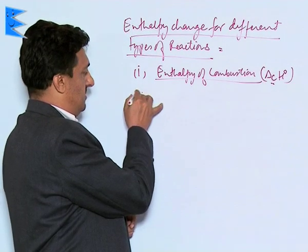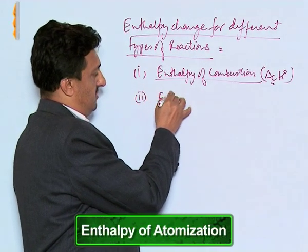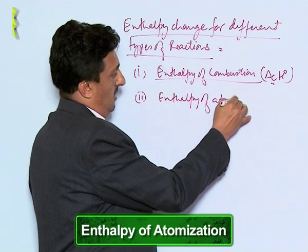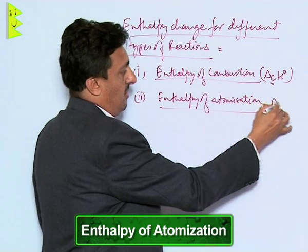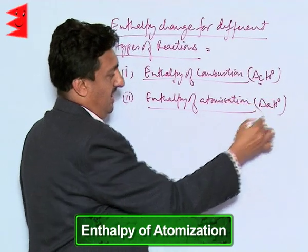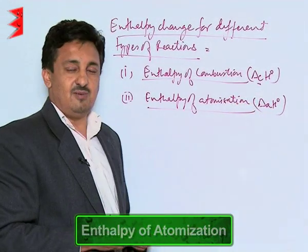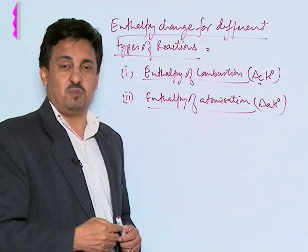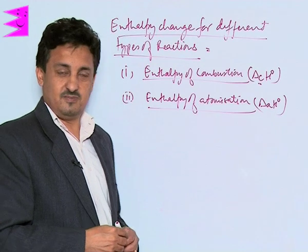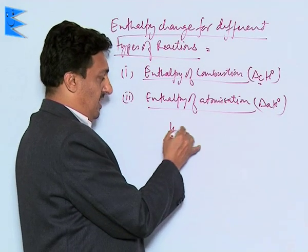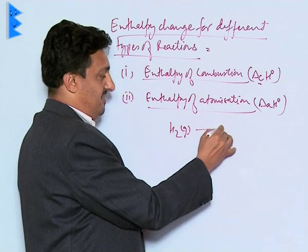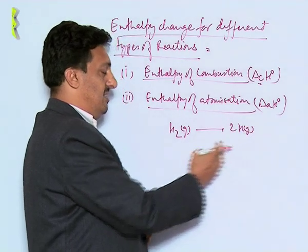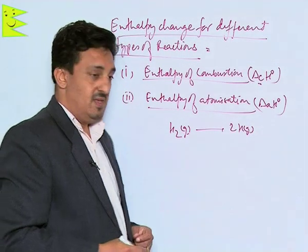The next in the list is enthalpy of atomization, denoted as ΔaH⁰. It is the amount of energy required to convert one mole of a diatomic molecular species to its gaseous atoms. For example, if we have a hydrogen molecule in the gaseous state and we give energy, we get two hydrogen gas atoms — this is called enthalpy of atomization.